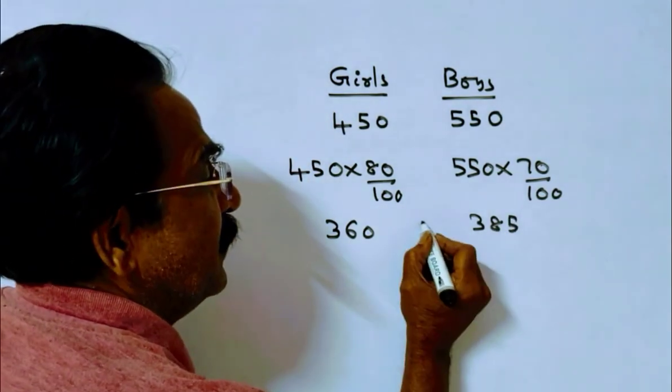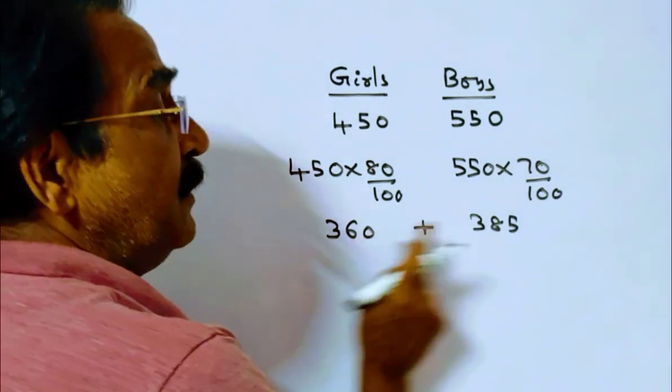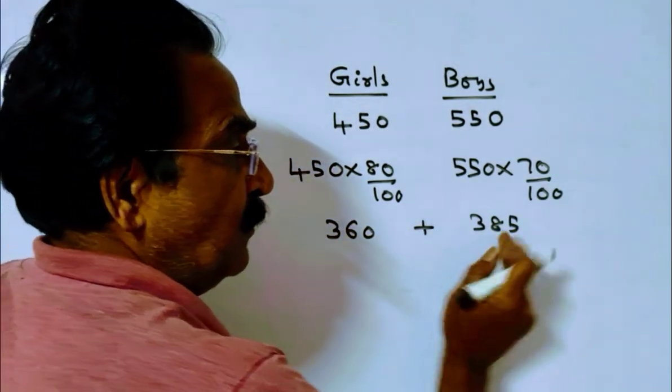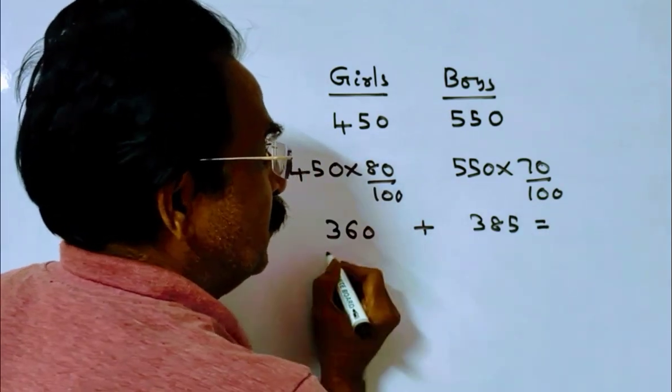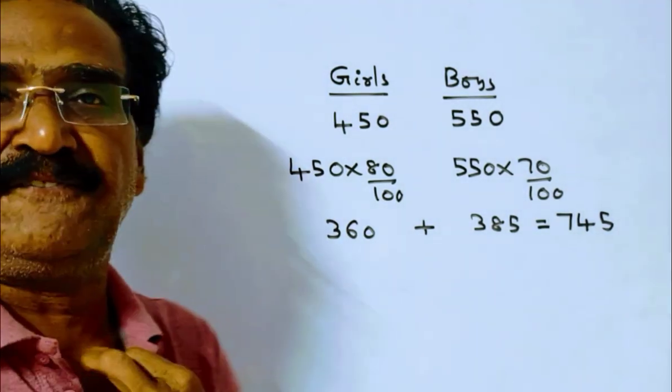360 girls scored more than 75%, 385 boys scored more than 75% marks. So total number of students who scored more than 75% marks is 745.